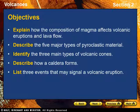At this point, you should be able to explain how the composition of magma affects volcanic eruptions and lava flow, describe the five major types of pyroclastic material, identify the three main types of volcanic cones, describe how a caldera forms, and list three events that may signal a volcanic eruption.